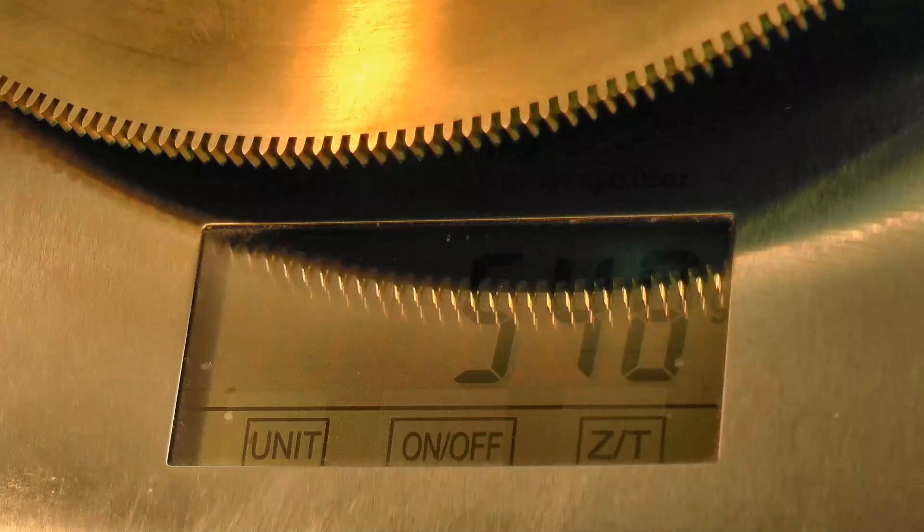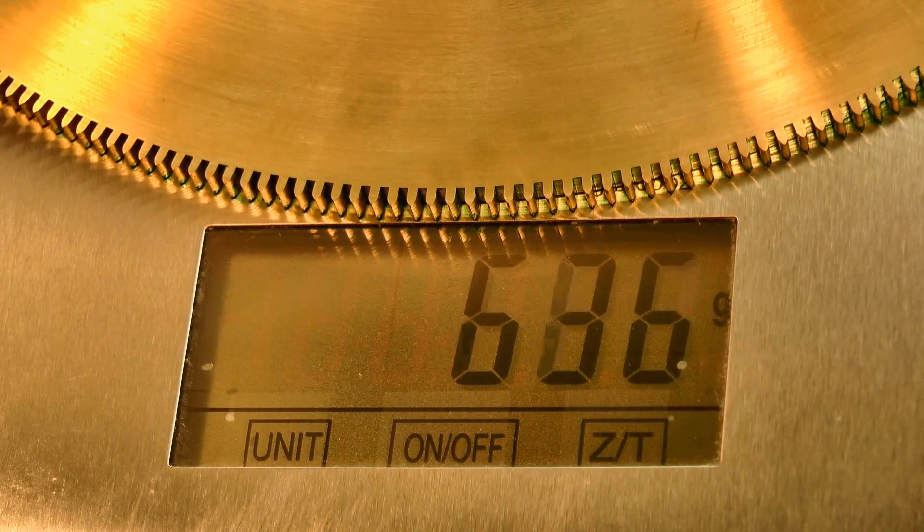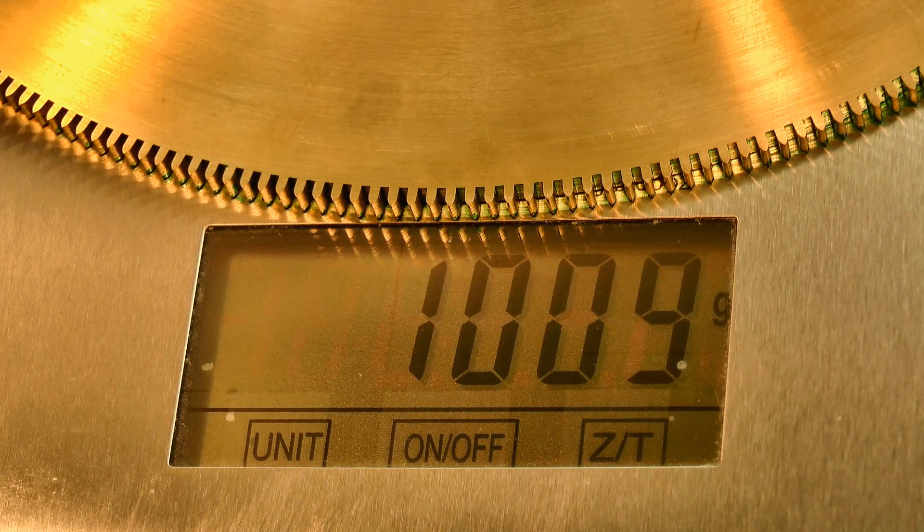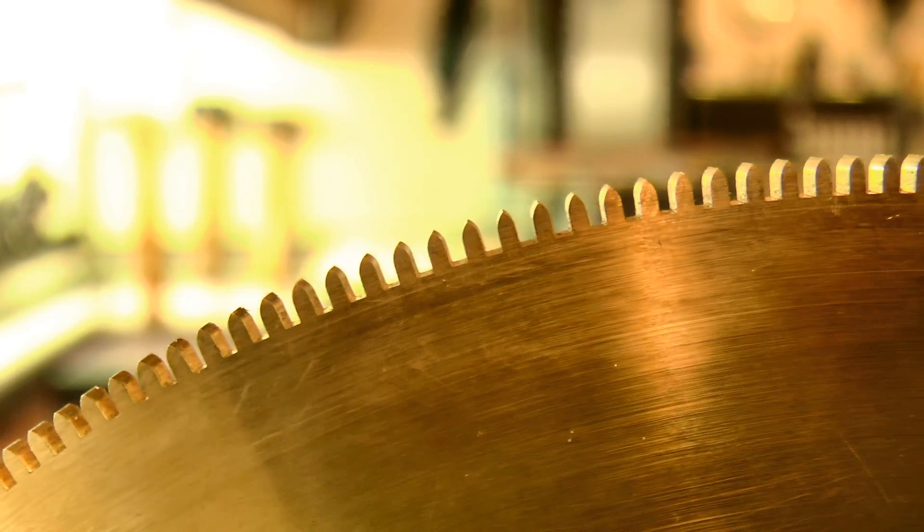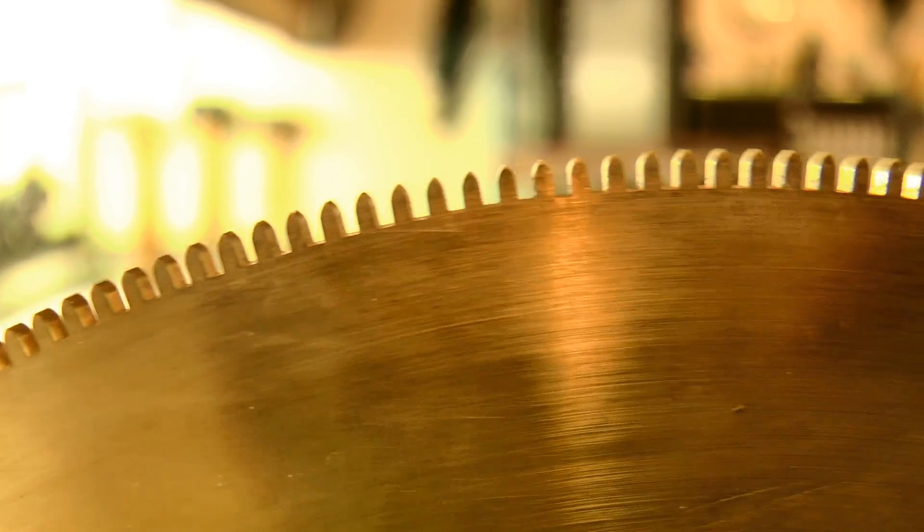I've chosen the largest wheel for this video, mainly because its size means it should be the easiest one to show the detail. Weighing in at just over a kilo, it's a fair chunk of brass, but by the time I'm finished crossing it out, it'll weigh just a fraction of that.